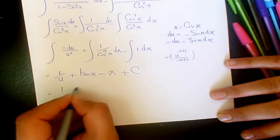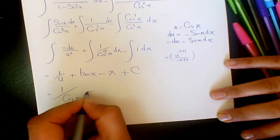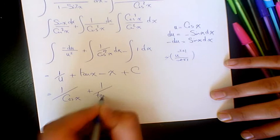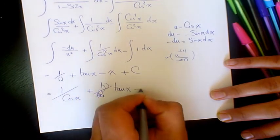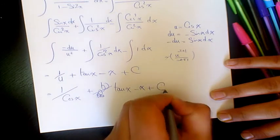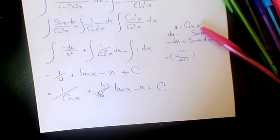So u is cosine x, so it's going to be 1 over cosine x plus tan x minus x plus a constant number.